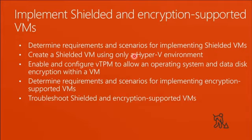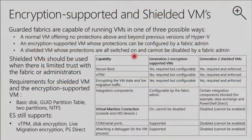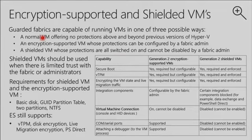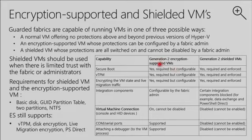The next topic is shielded or encryption-supported virtual machines. This is just part of attestation and key providing service — the machine should run on a particular host, and the second part is who is able to access the content on a virtual machine. We have three scenarios here when running in a guarded fabric environment: you can run a normal machine that is not protected or encrypted, with no access protection between the host machine and virtual machine — which is normal in most situations. But we have two additional features: encryption-supported virtual machine, and shielded VM.